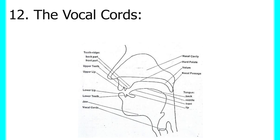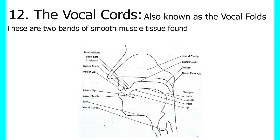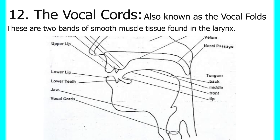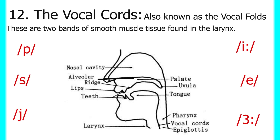Then we have the vocal cords, also called vocal folds — two bands of smooth muscle tissue found in the larynx, or voice box. They are responsible for producing sounds by vibrating as air passes through them from the lungs. The vocal cords are involved in producing all the vowel and consonant sounds in English. Sound is produced when air passing through the vocal cords causes them to vibrate and create sound waves in the pharynx, nose, and mouth. The pitch of sound is determined by the amount of tension on the vocal folds.